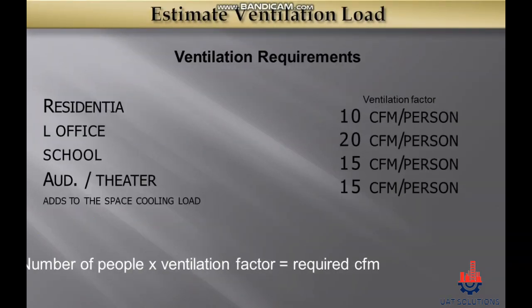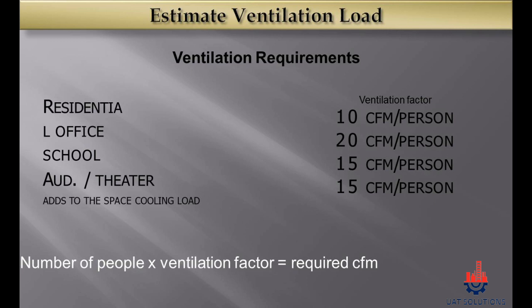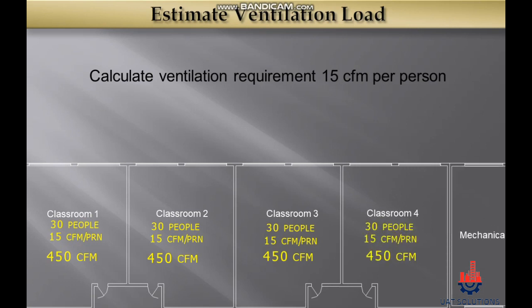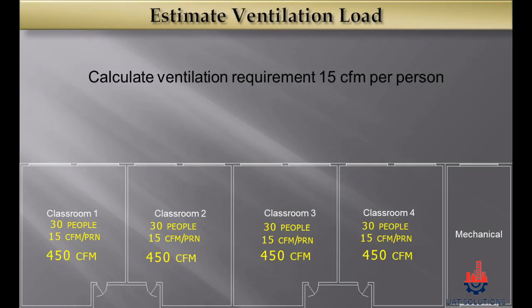The next step is to estimate the ventilation load. We can use the shown ventilation factors to calculate the CFM for ventilation required: 10 CFM per person for residential, 20 CFM per person for office, 15 CFM per person for school, and 15 CFM per person for theater buildings. The formula is: number of people multiplied by the ventilation factor equals required CFM. Assuming 30 people in one classroom and 15 CFM per person, we multiply 30 by 15 to get 450 CFM for ventilation load.